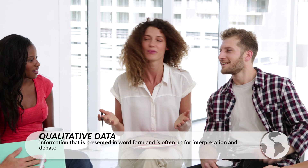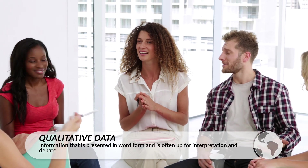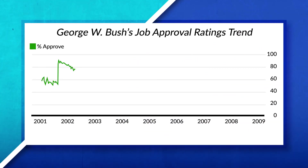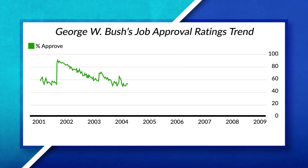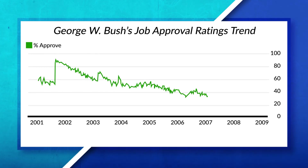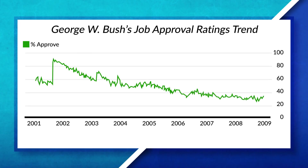Qualitative data is observations, interviews, and individuals' thoughts. This information is often up for debate and discussion. It is hard to replicate, since the information will often change depending on when it is collected and who is collecting it. For example, presidential approval ratings give geographers insights into how citizens of the United States view their president, as we can see here with President Bush's approval rating.